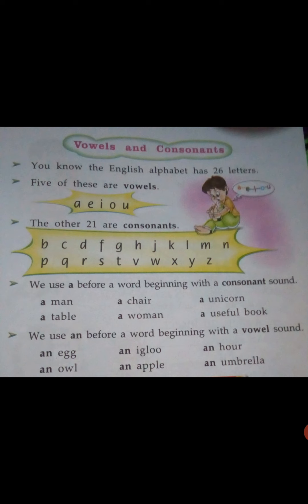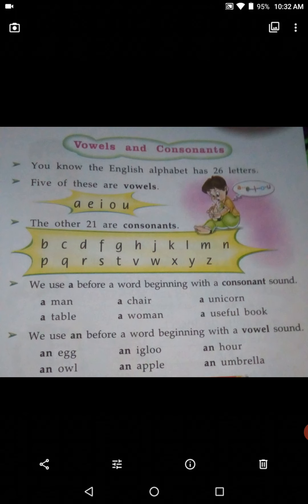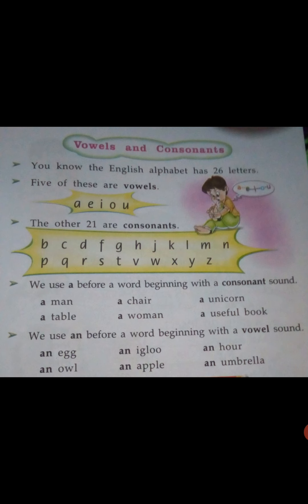Okay, and how many alphabets? There are 26 alphabets in English. We use 'a' before a word beginning with a consonant, and we use 'an' before a word beginning with a vowel. For example: an egg, an owl, an igloo, an umbrella. So these are vowels and consonants. Always remember: there are 26 alphabets, 5 vowels, and 21 consonants.